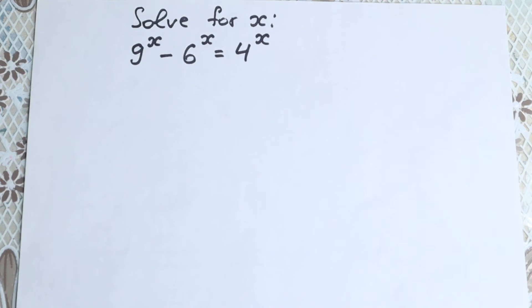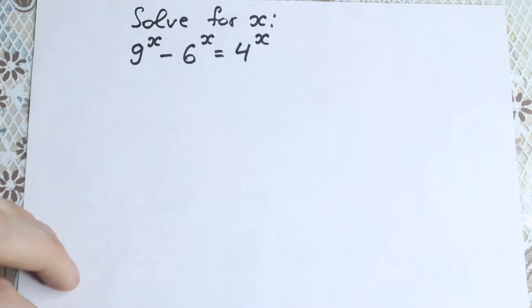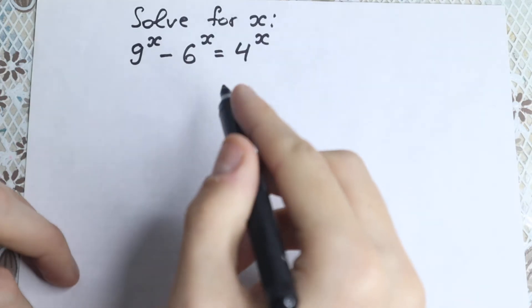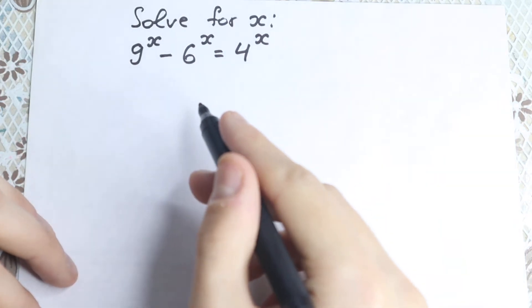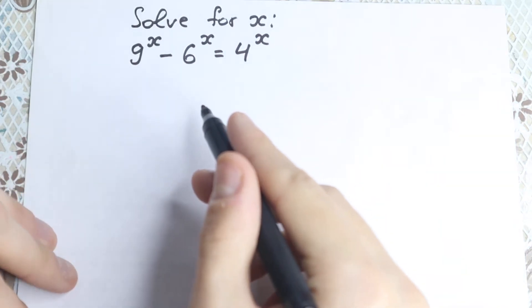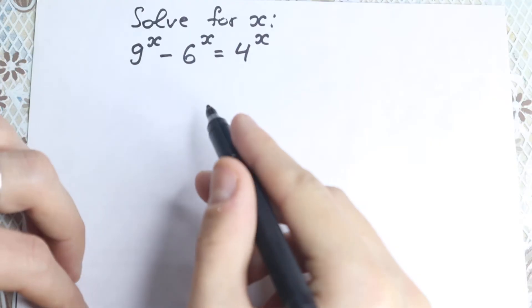Hello my friend, happy to see you here. We have a really interesting exponential equation today: 9 to the x minus 6 to the x equal to 4 to the x. I hope you will enjoy my solution to this interesting problem.